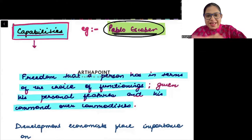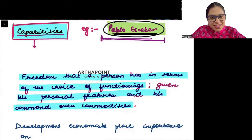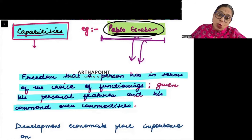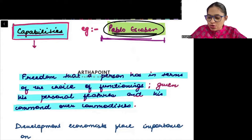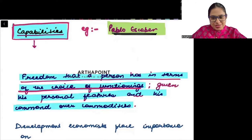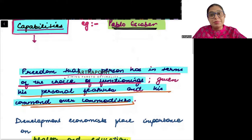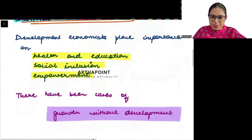This is a typical example of capability, actually. Freedom that a person has in terms of choice of functioning, given the command over commodity. The commodity is money - how he wants to use his money, the freedom to use it in the way he wants, is his capability. Let's read this out. Freedom that a person has in terms of choice of functionings, given his personal features and his command over commodities. This is what we call the capability approach.